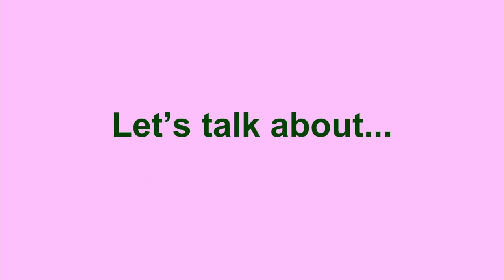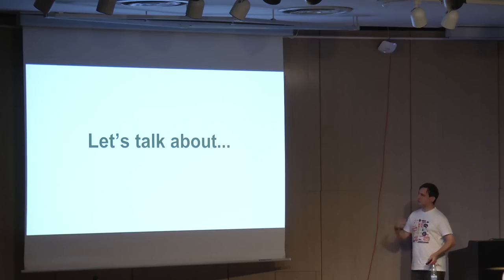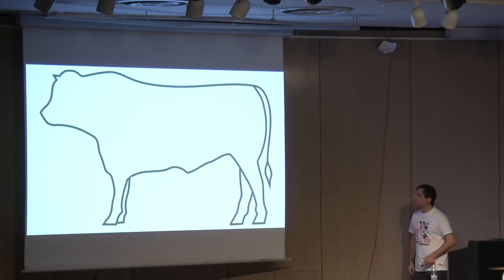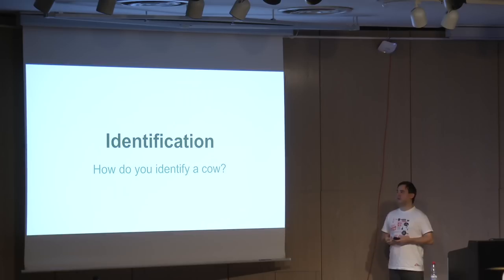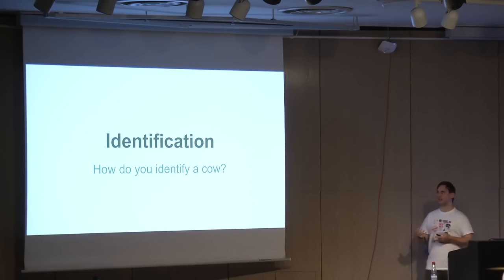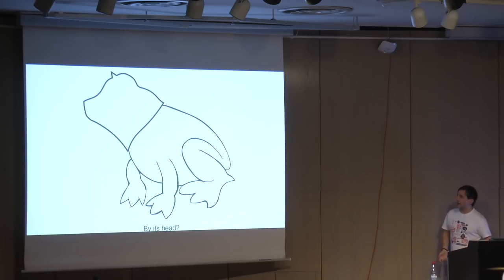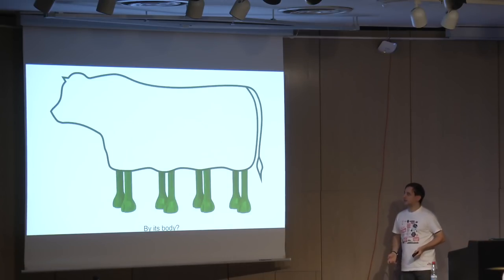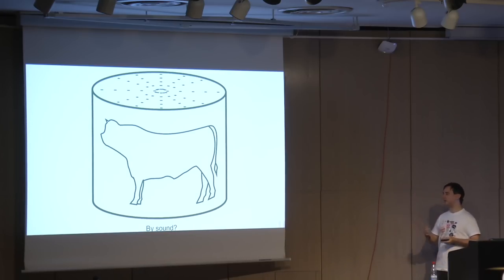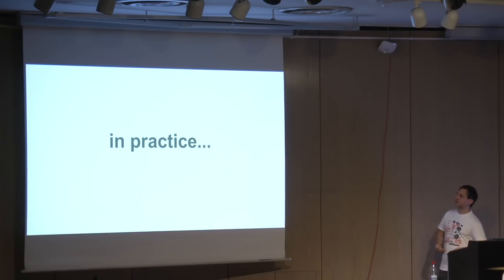Let's go back to the fundamentals and talk about cows. How do you identify a cow? How would the possible ways to identify a cow work? And of course, we can apply the same model to files. Is it by head? Is it by the body shape? Is it by the sound? You can see that identifying a file could be done in different ways similarly.